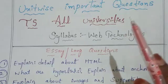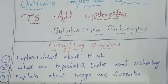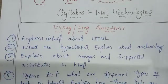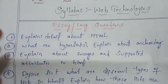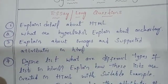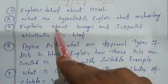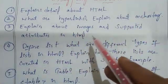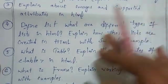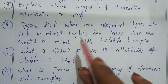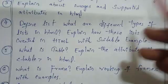Starting with Web Technologies. First unit is HTML. There's a question on introduction, second question is hyperlinks and anchor tag explained, third question is images and supported attributes in HTML. These three questions have videos. Define list - what are different types of lists in HTML, explain with suitable examples. Many questions for the first unit.